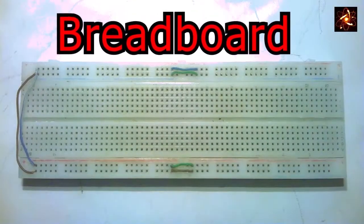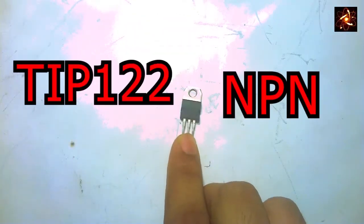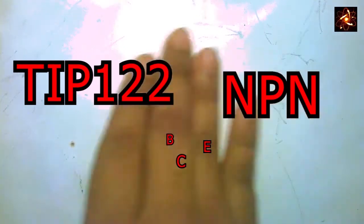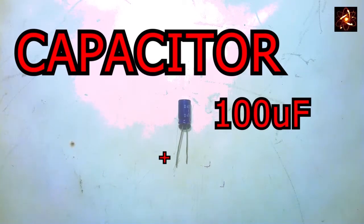For this project we need a breadboard, an NPN transistor which is TIP 122, a 100 microfarad capacitor with the long terminal as the positive of the capacitor.